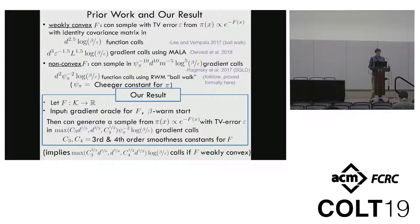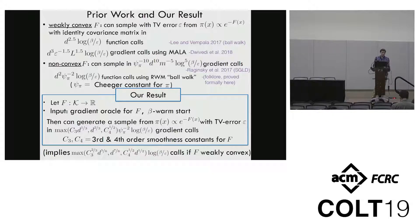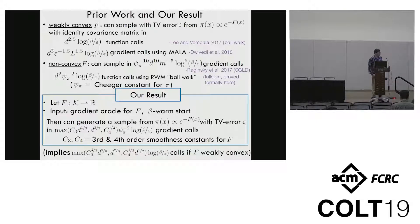Now I'll talk about the results that we show. We assume that we have access to an oracle for the gradient of f, and we're also given an initial point which is a warm start for our target distribution. We show that the MALA algorithm can generate a sample from the Gibbs distribution with some TV error epsilon in a number of gradient evaluations which grows roughly like dimension to the two-thirds times one over the square of the Cheeger constant times this smoothness constant C3, and also grows logarithmically with one over epsilon. The main point is that for applications where these third and fourth order smoothness constants are relatively small, we obtain an improvement on the running time for MALA in this non-convex setting.